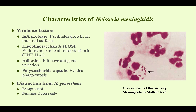Virulence factors: remember it has an IgA protease, which helps it grow on mucosal surfaces. IgA is the predominant antibody on mucosal surfaces and prevents bacteria from growing there. The protease cleaves that IgA dimer and prevents it from working. Lipooligosaccharide is also a characteristic of the Neisseria species — this is an endotoxin that creates an immune response and can lead to sepsis.